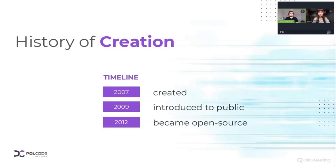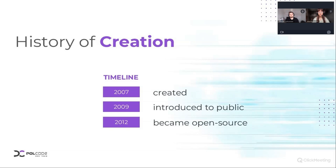I encourage our viewers to visit the link shared in the chat — it's the article that David recently wrote, and it covers all of the basics. Now I'd like to switch into discussing the benefits of Go. Go in general aims at simplicity, efficiency, and concurrency — it tries to manage multiple tasks that are being done at the same time. And it's a huge plus for products in industries such as fintech, e-commerce, or banking. Most business owners are looking for a way to allow their systems to process multiple tasks at the same time.